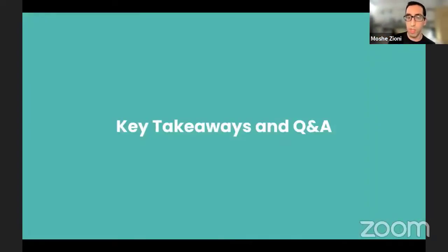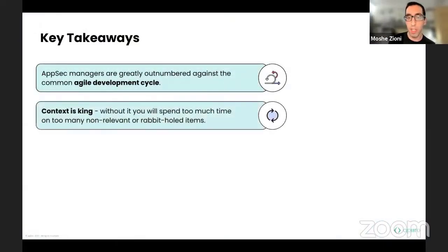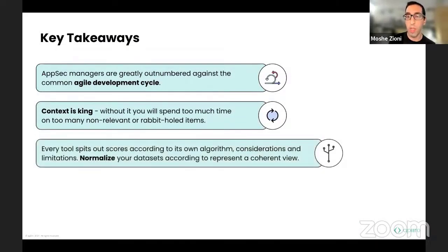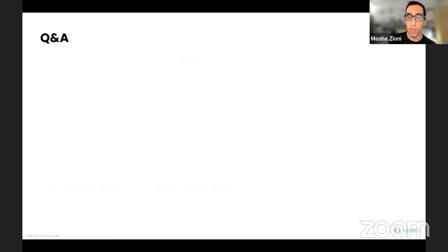This brings us to the key takeaways: the agile development cycle should be matched by an equally agile security cycle. Context is king — we should consider context all the time. Without normalization of the data, we won't be able to coherently look at the datasets and decide what actions to take. And lastly, the optimization and consistency of automation is super important for the long run altogether.